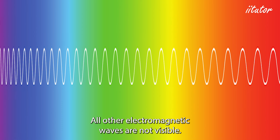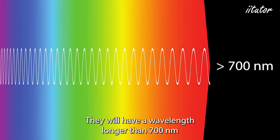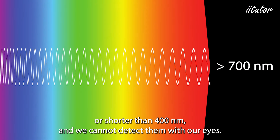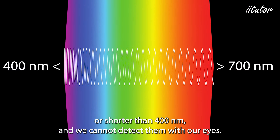All other electromagnetic waves are not visible. They will have a wavelength longer than 700 nanometers or shorter than 400 nanometers, and we cannot detect them with our eyes.